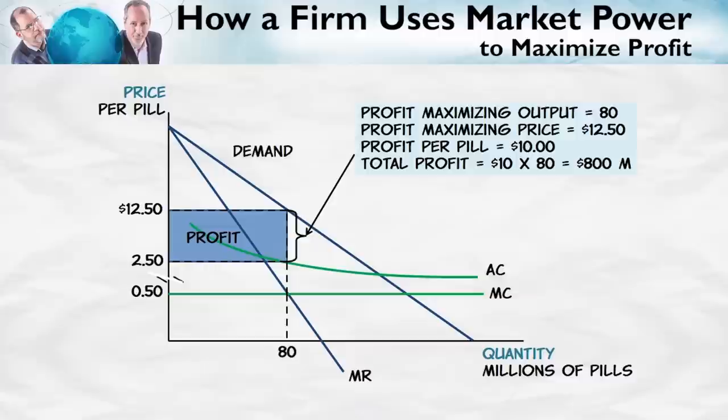In a competitive market, we know that price is equal to marginal cost in equilibrium. In a market with a monopoly, we know that price will be greater than marginal cost. But how much greater? What determines the markup? What we're going to show in this talk is that the monopoly markup depends upon the elasticity of demand.